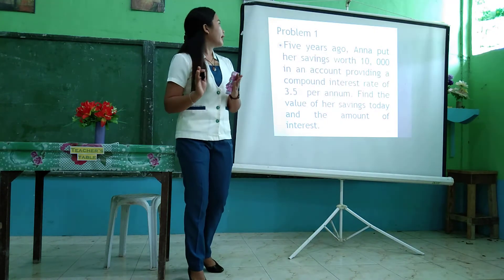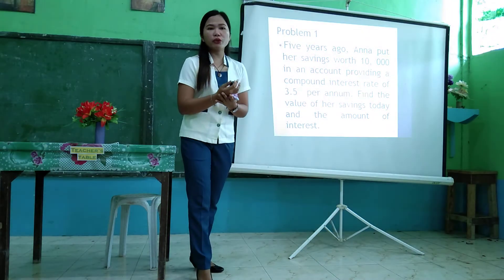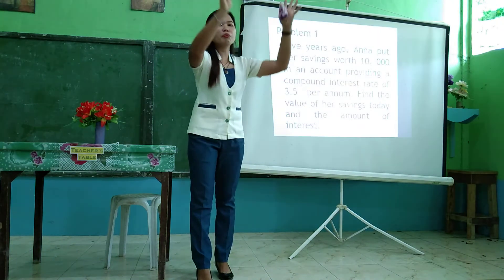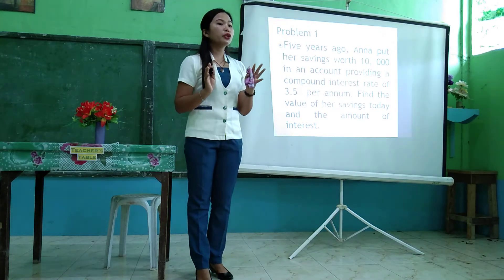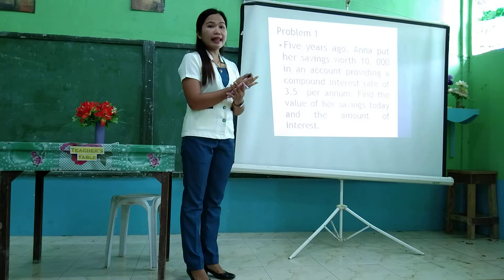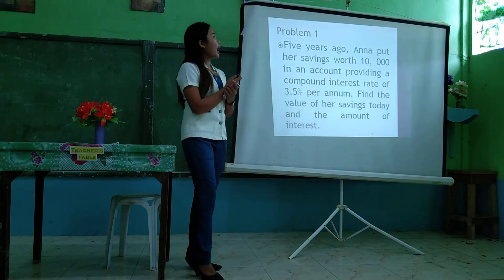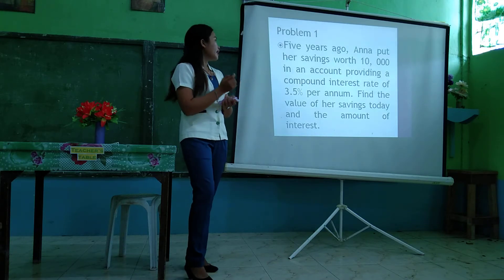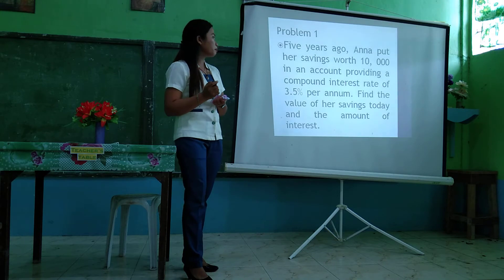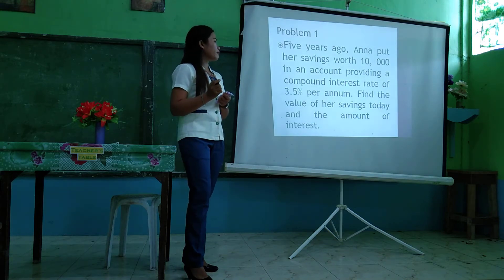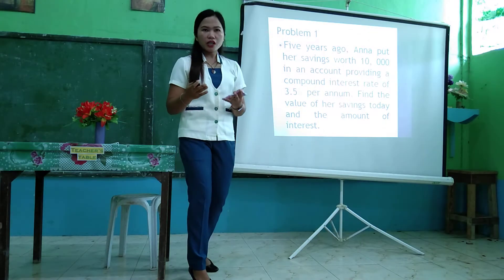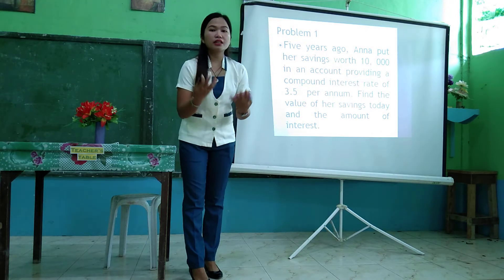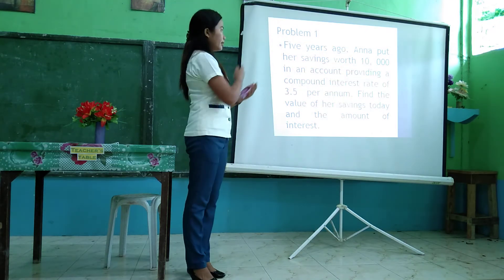I have here another activity. I will group you into three — count off one, two, three. Group one over here, group two, and group three. Go to your group now. The situation is Problem 1: Five years ago, Anna put her savings worth 10,000 pesos in an account providing a compound interest rate of 3.5% per year. Find the value of her savings today and the amount of interest. I will give you five minutes for collaborative learning to solve that problem.